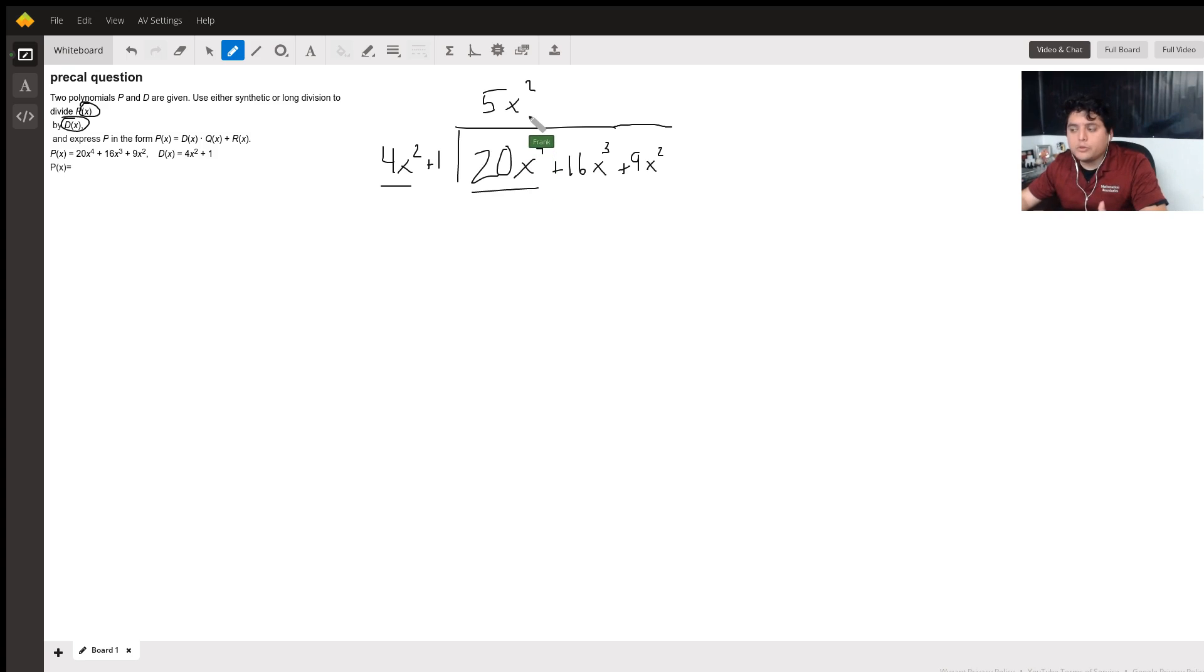However, you have to subtract whatever 5x squared times 4x squared plus 1 is from the original polynomial. So let's figure out what that is.